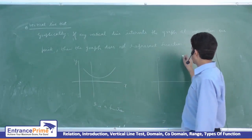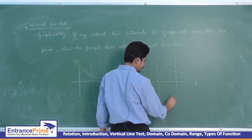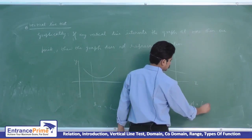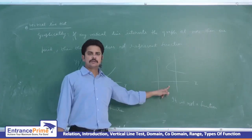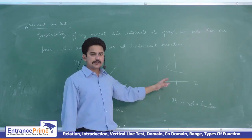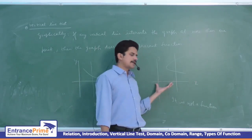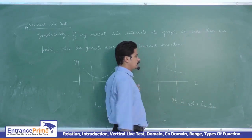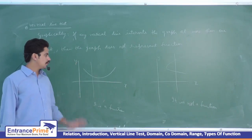For example, if the graph is like this, there are two points of intersection — so it is not a function. It has the same mathematical meaning that an element in set A is having two images in set B. Geometrically, there is some point x and for the same x we have two values of y — so it is not a function.